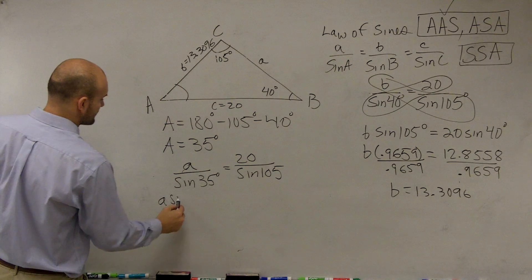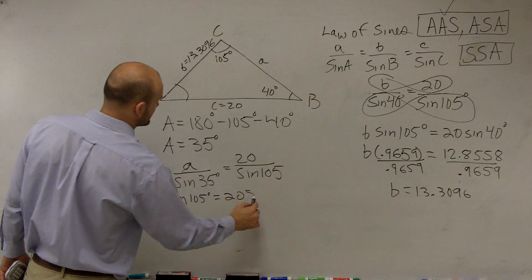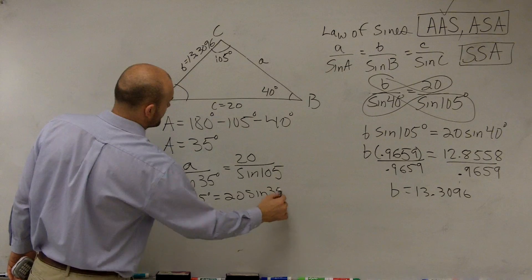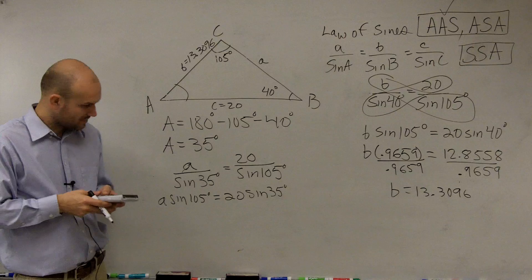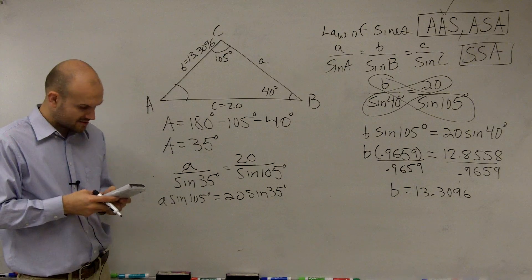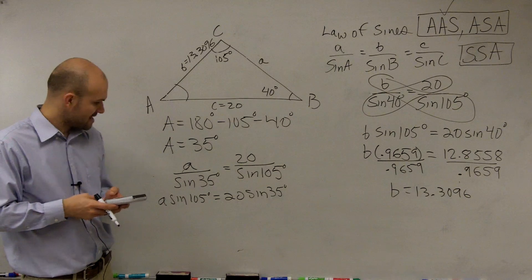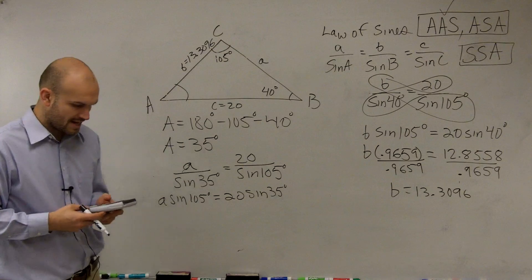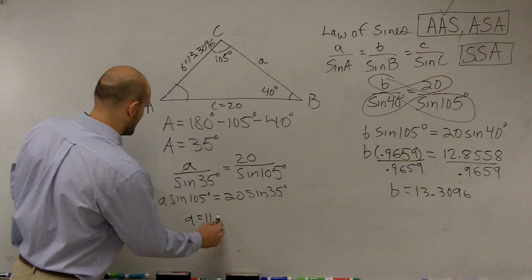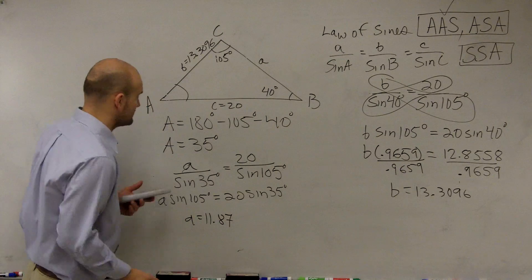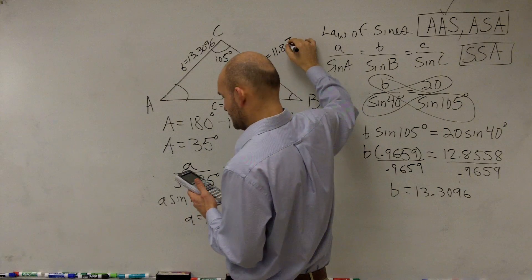Again, cross-multiply, you have A times sine of 105 degrees is equal to 20 times sine of 35 degrees. So what we'll do is do 20 times the sine of 35. And then what I'll do is divide that by the sine of 105. And therefore, I get A equals 11.878762.